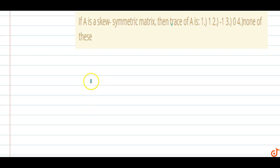In this question, if A is a skew-symmetric matrix, then trace of A is: option 1 is one, option 2 is minus one, option 3 is zero, and option 4 is none of these. So we need to find the trace of A.